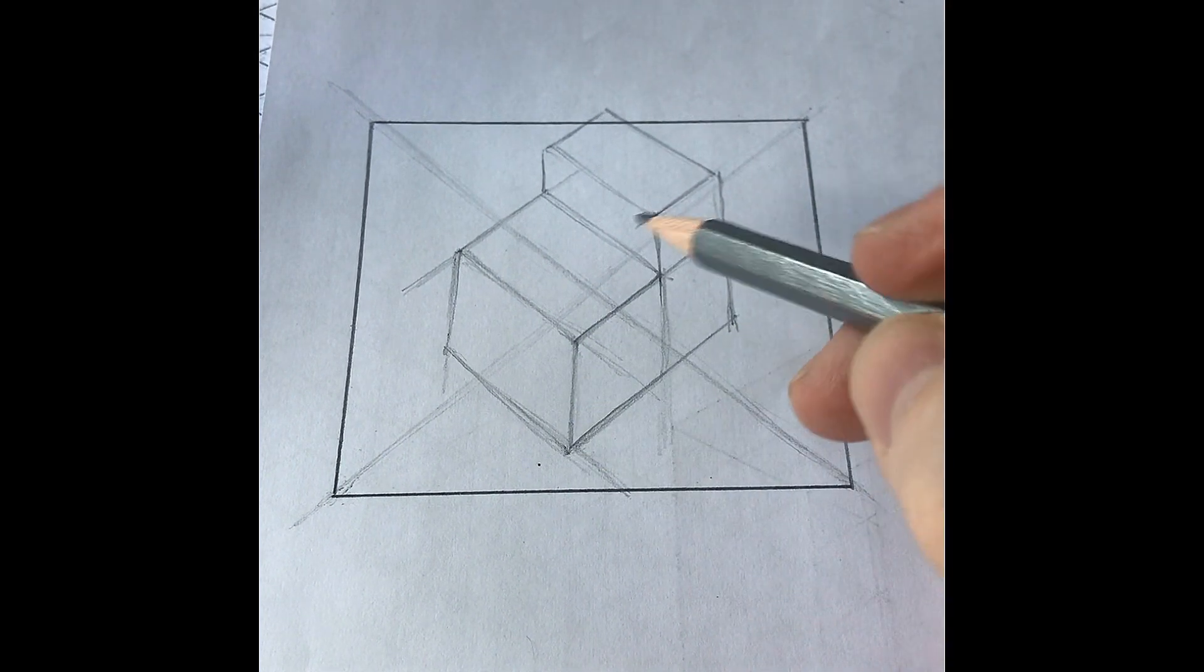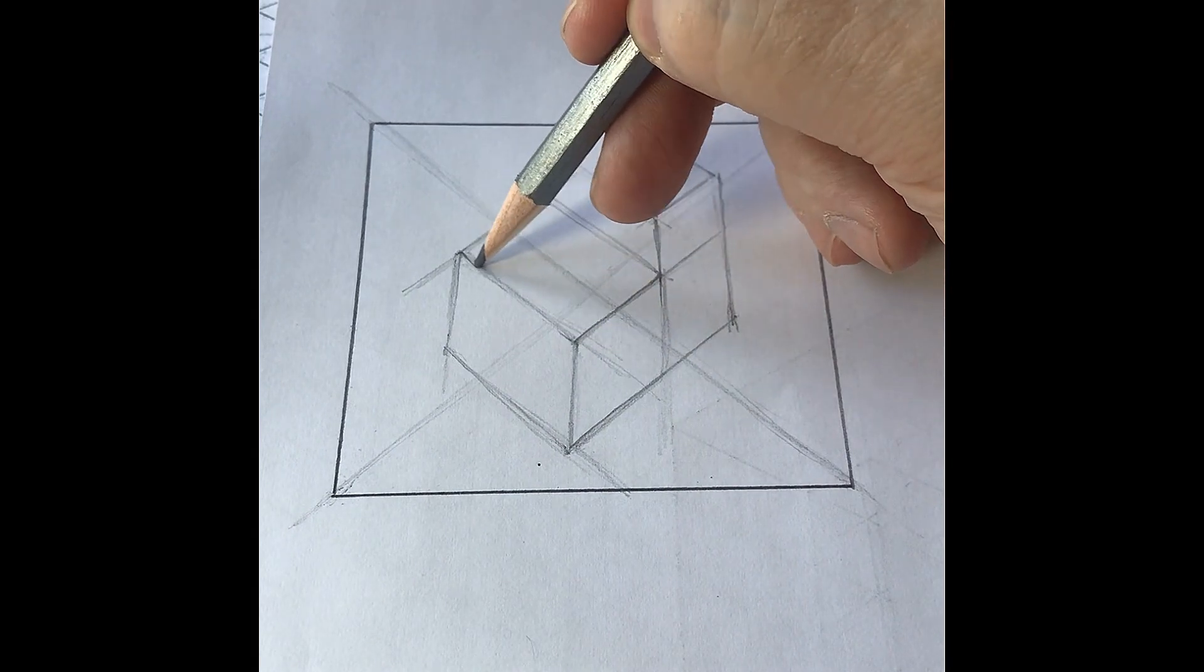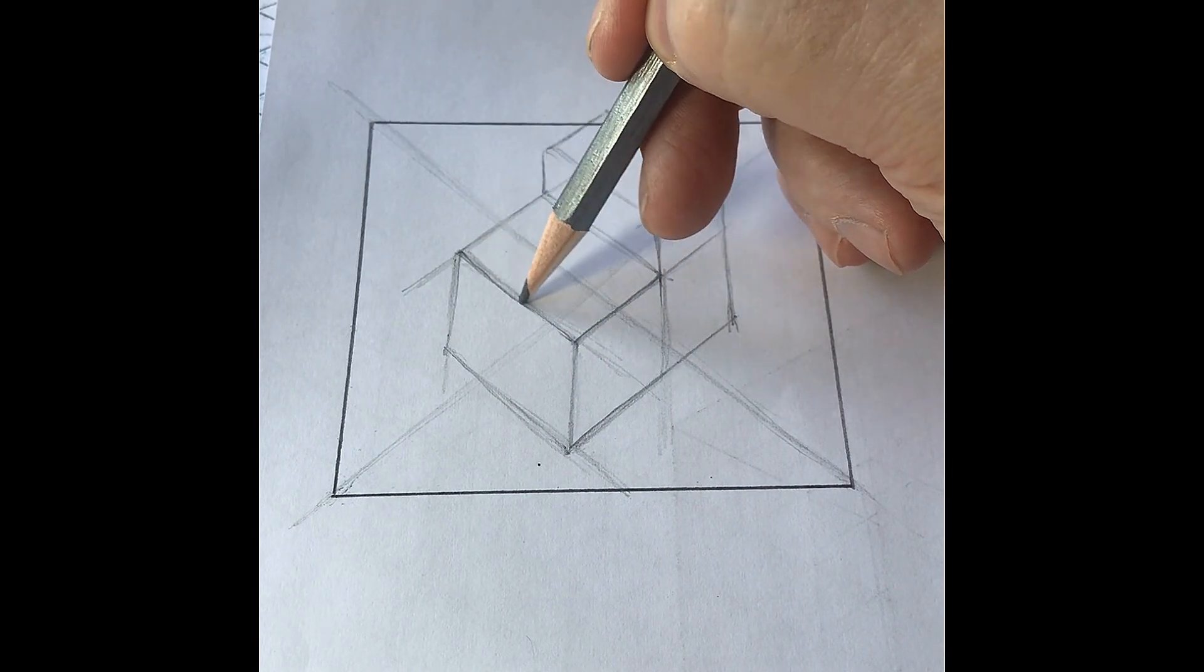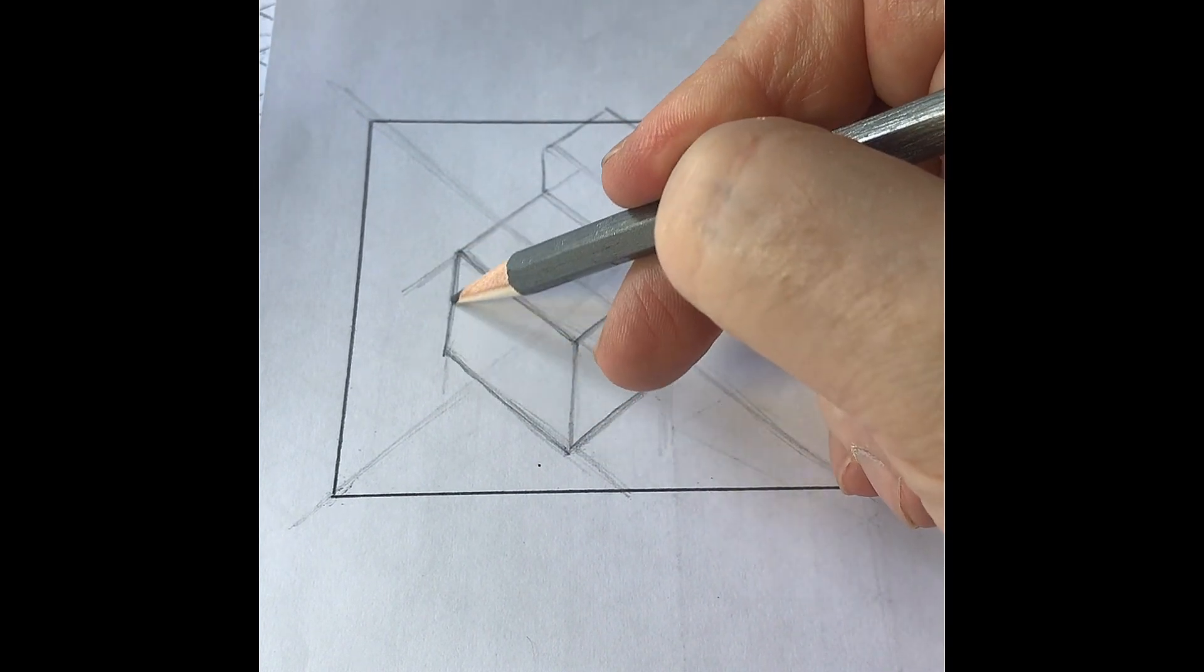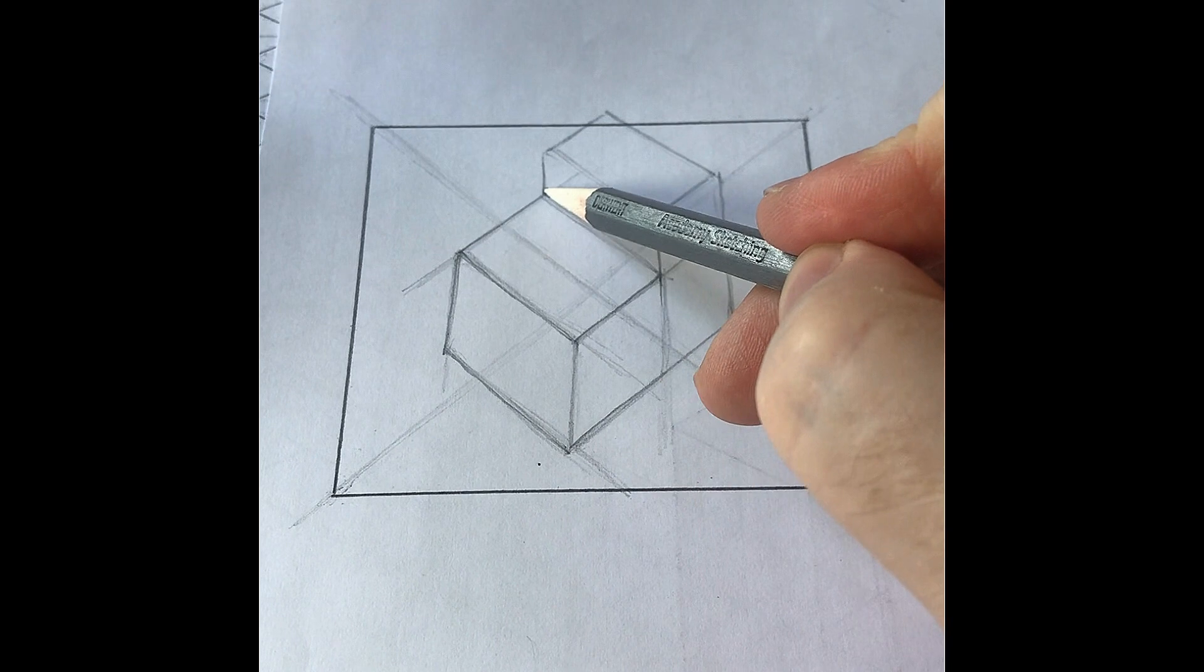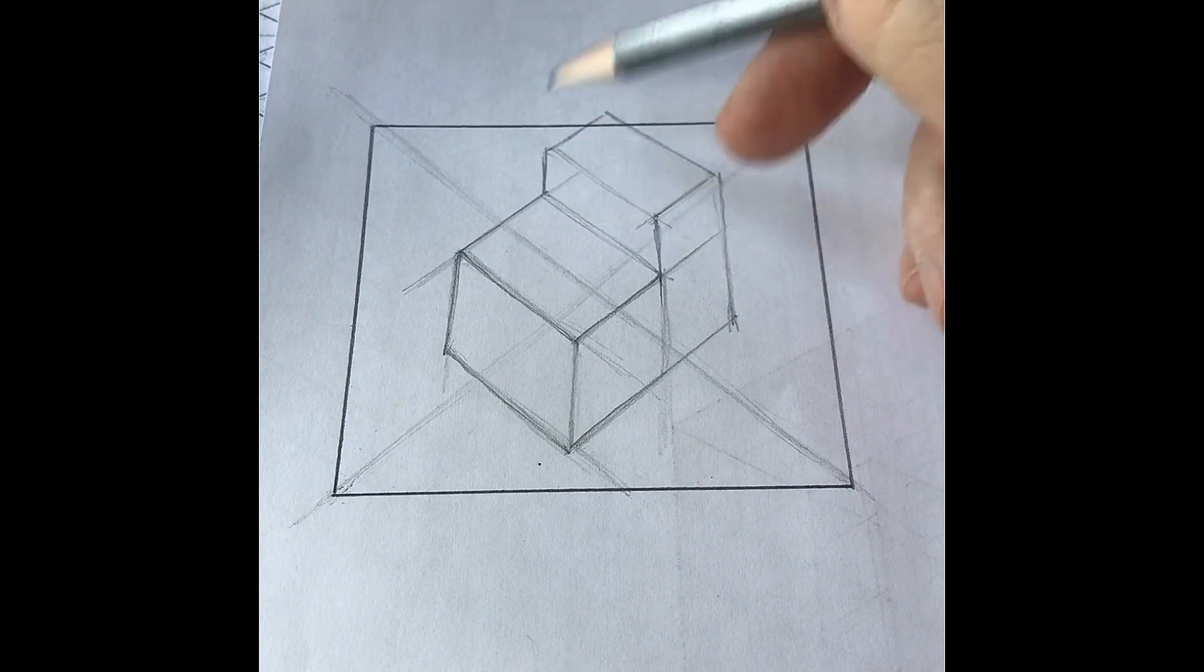Now what I'm going to just do here, this is a linear drawing, a line drawing. I'm not going to add any tone to this drawing, but I am going to emphasize the edges of the shape. This is all drawn freehand without any type of ruler.